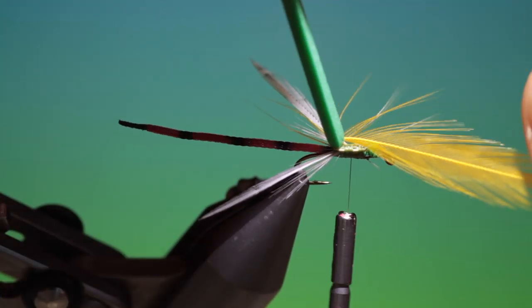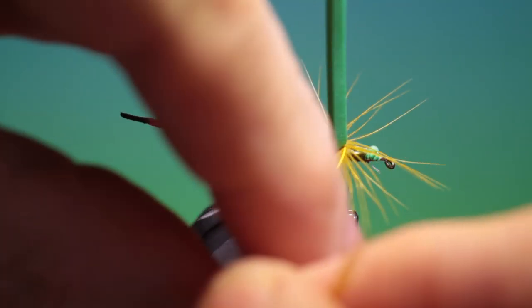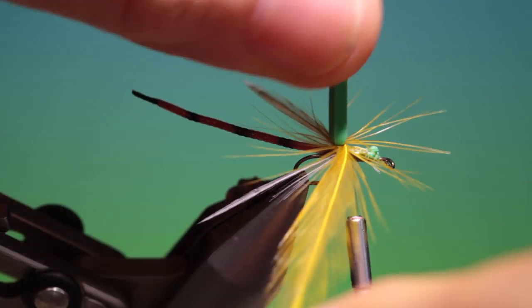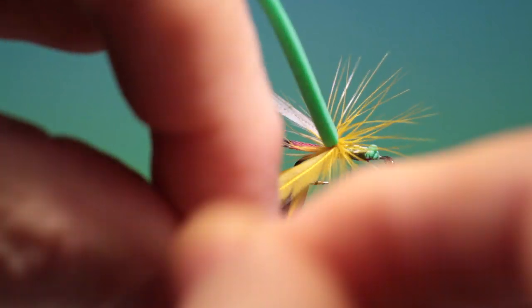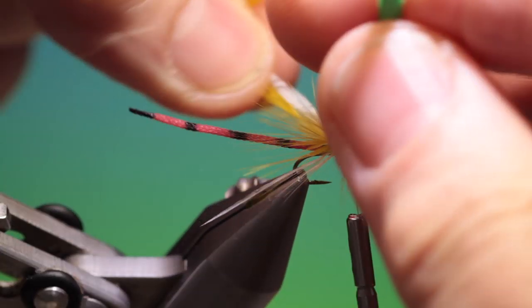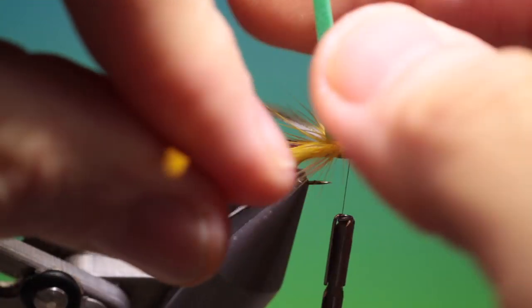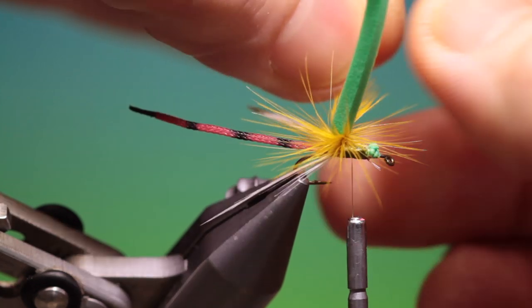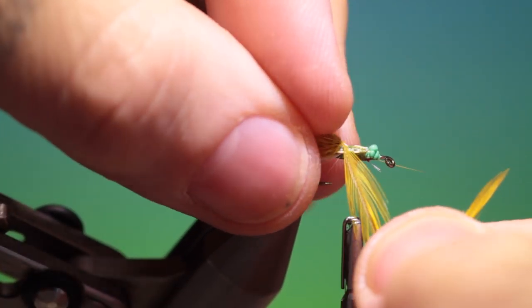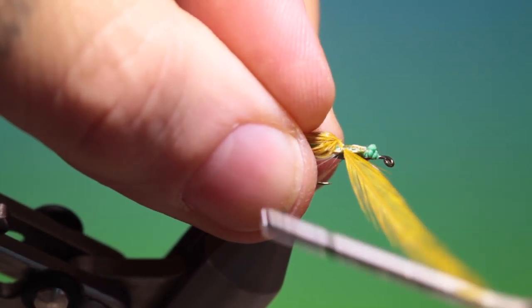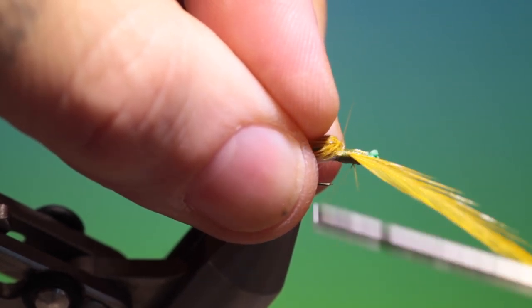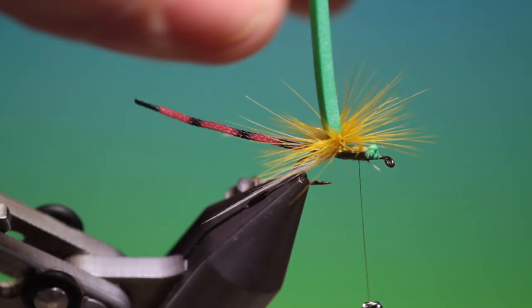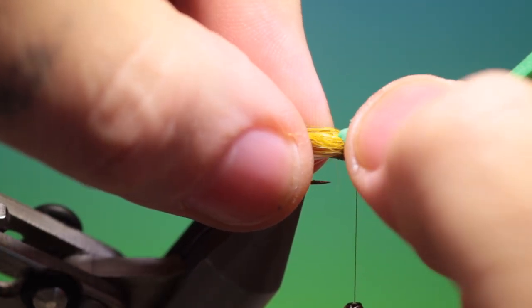Now what I like to do with this hackle is just run it forward and bend the stem over, just to secure it. And then we can trim that off. And we take our hackle and wrap this parachute style around the base of the foam. This is a very popular pattern in New Zealand where they have prolific damsel hatches on lakes.